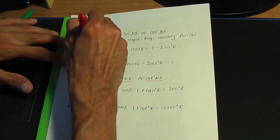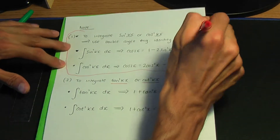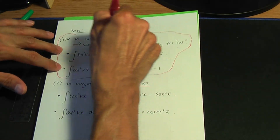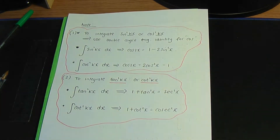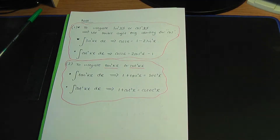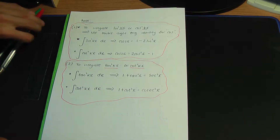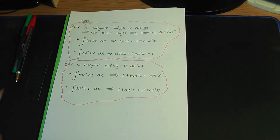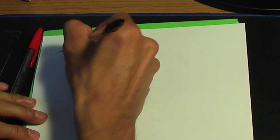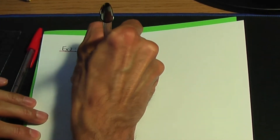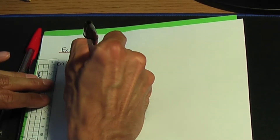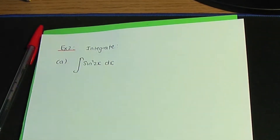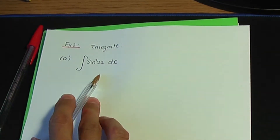These are very important notes for integrating such trigonometric terms. Now let me show you how these results work with examples. In part a, we're going to integrate sin²(2x) with respect to x.